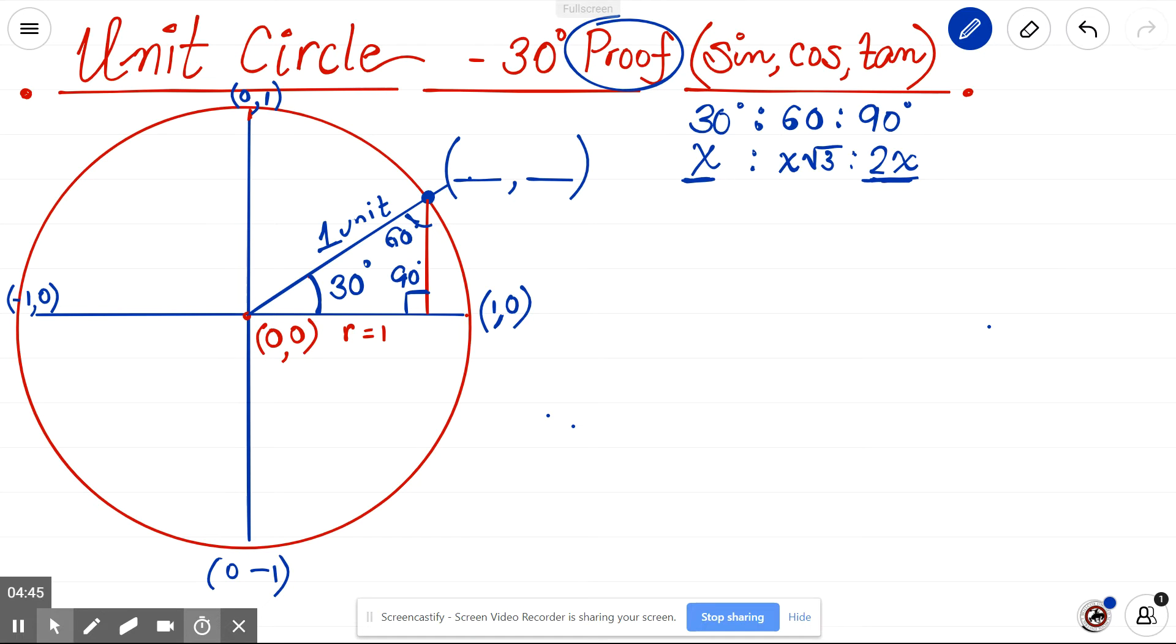If this is 2x, this is x. So the side right opposite to 30 degree is going to be half of it. So what is the half of 1, 1 by 2. Now the side right across 60 degree is nothing but this side times the root 3. So that means the length of this side of the triangle, I can take it as root 3 by 2.